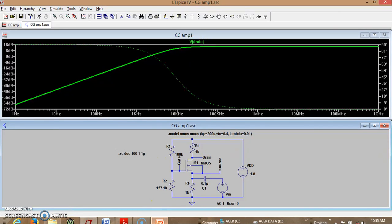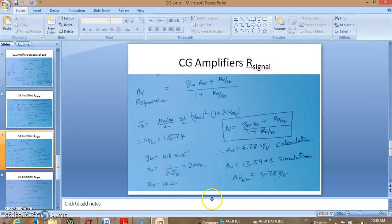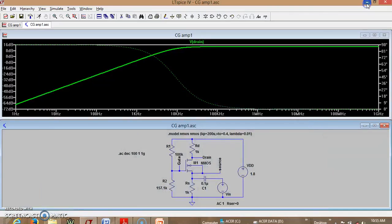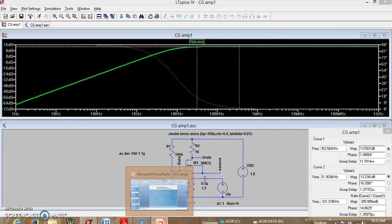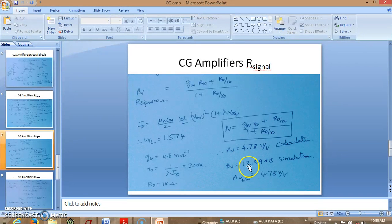So gain is supposed to be, from your calculation gain is supposed to be 4.78 volt per volt. So let us first find out what is the gain in simulation. If you actually double click on this we have the gain. I can see it is 13.59 dbs.